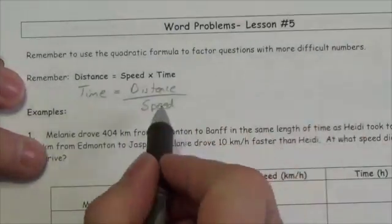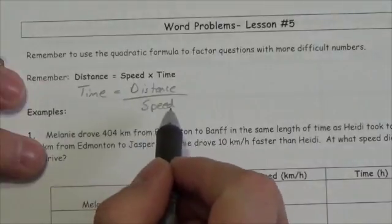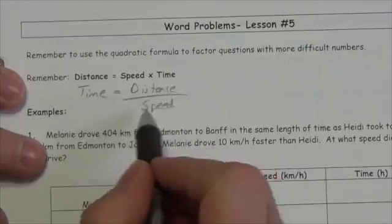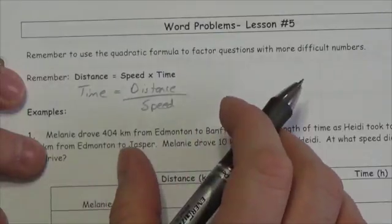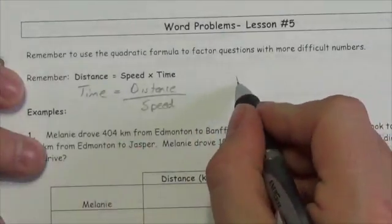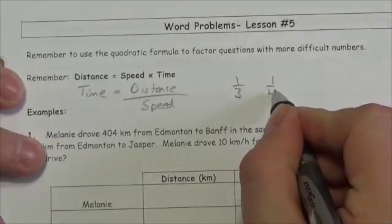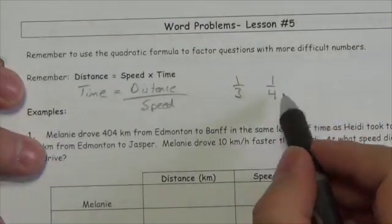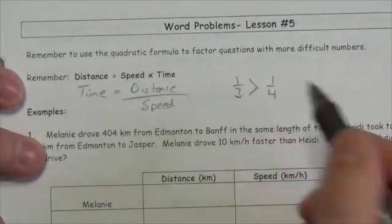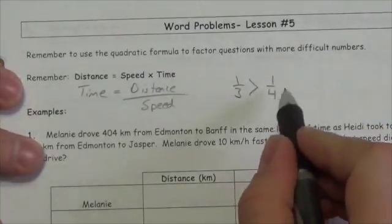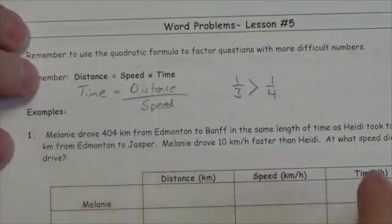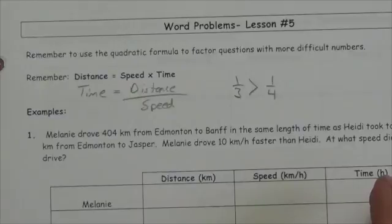Another thing to remember: when you have a fraction, the larger your denominator, the smaller the fraction. For example, one-third versus one-fourth — one-quarter is smaller; one-third is larger than one-quarter. That might not seem important right now, but it really is once we start working through the problems, and I'll show you why in a few minutes.